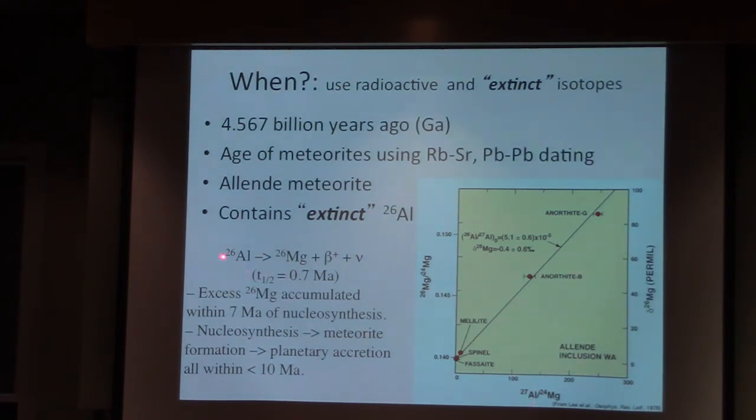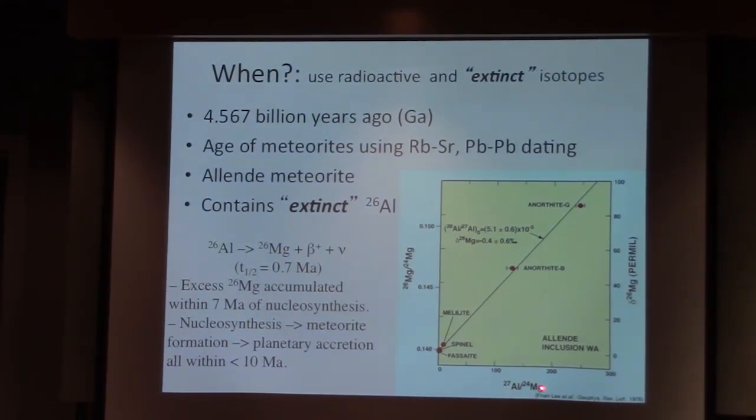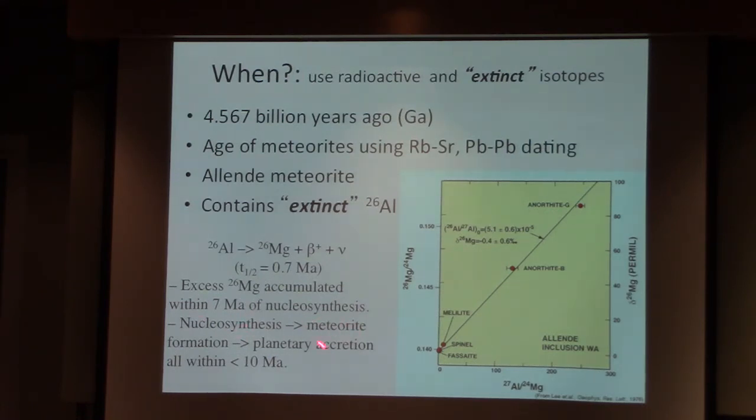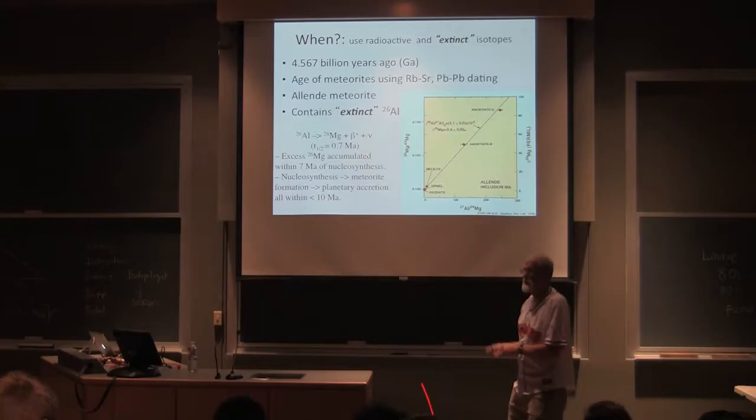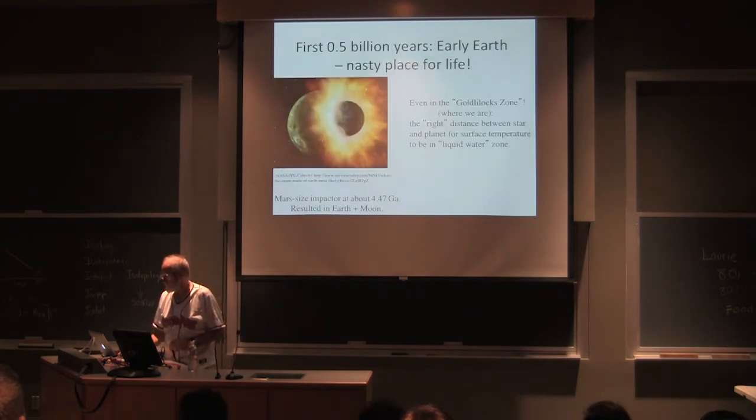So this Allende meteorite is one which has extinct aluminum-26. Aluminum-26 decays to magnesium-26. And so here's an example - these are both stable isotopes. These different minerals have different amounts of magnesium in them or different amounts of aluminum in them. There's almost no aluminum in this, but if it has aluminum-26, it builds up magnesium, so we get this high excess magnesium-26. So one of the things we can do is measure these extinct isotopes. So nucleosynthesis, meteorite formation, planetary accretion, all within 10 million years. So this meteorite had to form within 10 million years of nucleosynthesis. It's basically the age of what the asteroids are.